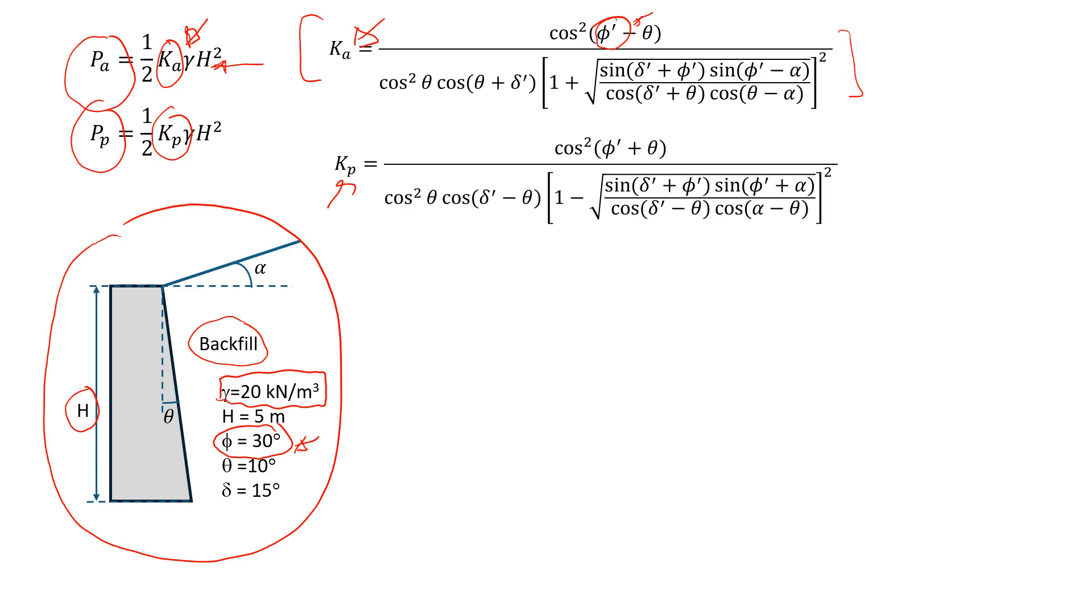Here is given as effective stress. In many cases, there is no groundwater level in the backfill because there is typically drainage provided. So there is no groundwater level, and most likely the total stresses and effective stresses are going to be the same because the pore water pressure is equal to zero.